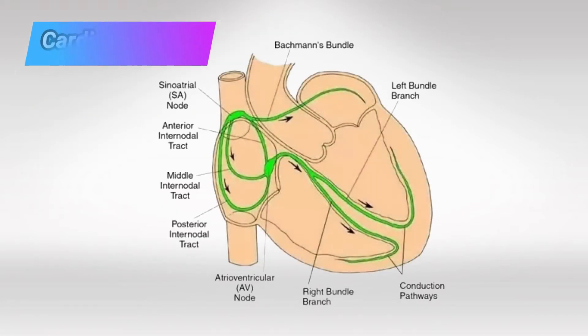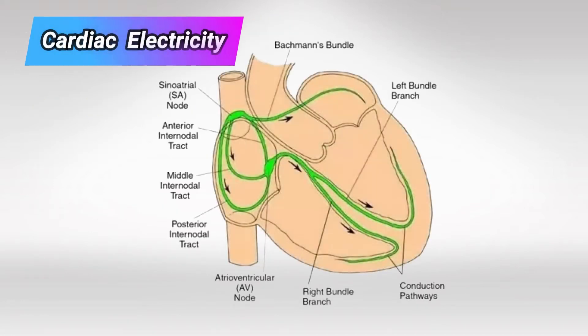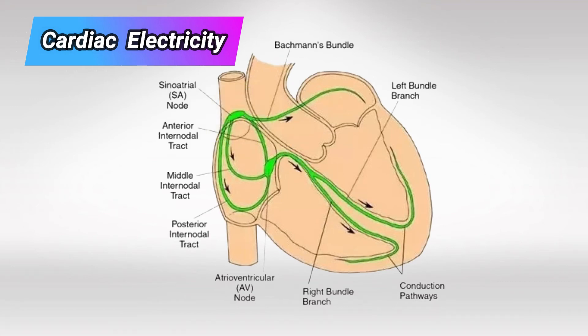The heart rate is maintained by electrical impulses, which are electrical signals that are generated from the top of the heart and travel all the way down to the bottom. These electrical signals excite the muscles as they go down, so the muscles excite from top to bottom accordingly.